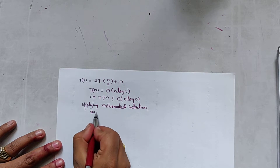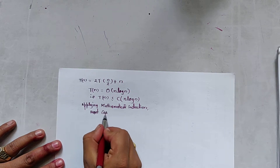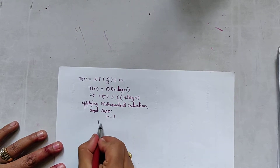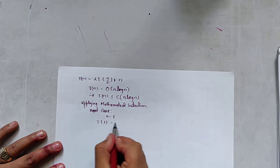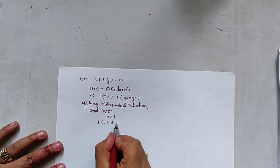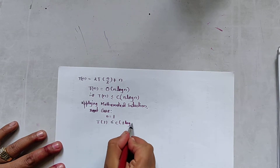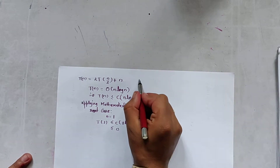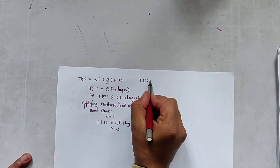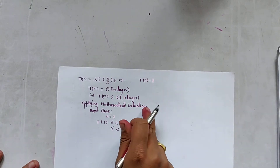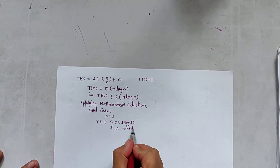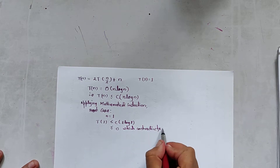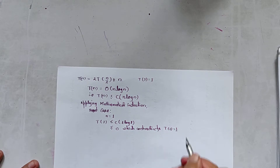The first case is the base case. Let us suppose n = 1. Then T(1) becomes c·1·log 1, which equals 0. But we know T(1) = 1, so this contradicts our assumption — T(1) = 1 ≠ 0.